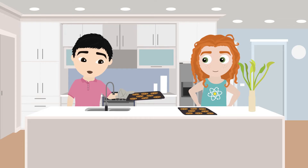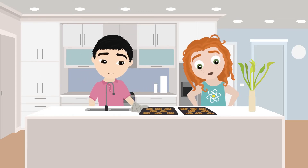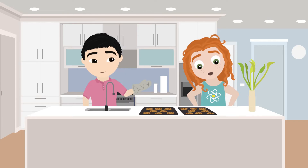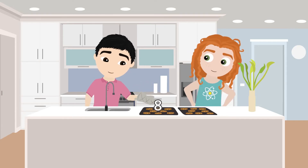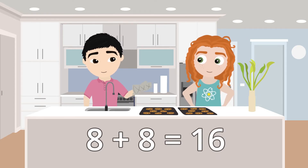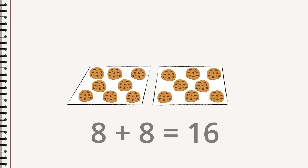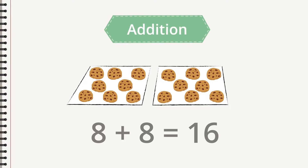Second sheet done. Eight more cookies. And we already had one sheet with eight cookies. That makes it eight plus eight, of course, sixteen cookies. Yes, sixteen cookies. You add eight to eight, and the result is sixteen. This way of calculating is addition.